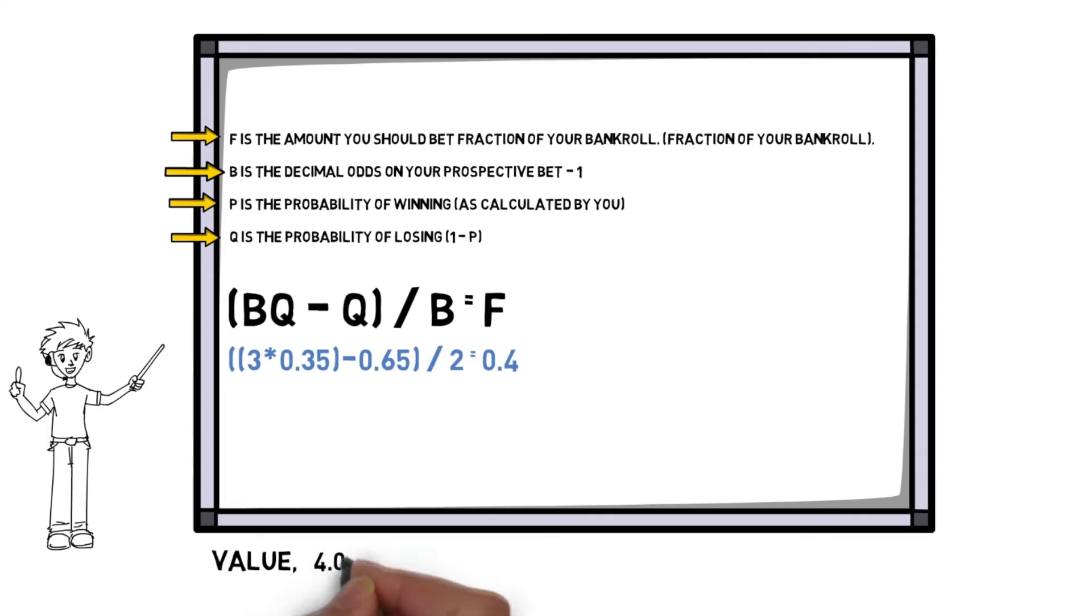If the decimal odds for a bet are 4.0, then the supposed possibility of that bet is 25% or 0.25. If you believe that the likelihood of the wager being effective is bigger than 25%, then you've recognized a positive EV.